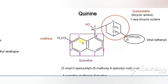In the case of the quinoline ring, it has a methoxy group at the sixth position. In the case of the quinuclidine ring, it has a vinyl group at the fifth position. Vinyl is CH=CH₂, also called ethenyl, and it is attached at the fifth position.